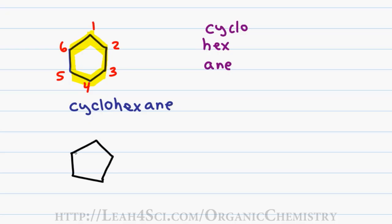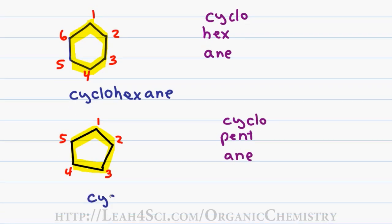Let's try another problem. For this molecule, I have five carbons in a ring giving me a first name of pent, a prefix of cyclo and the last name of Ane for the single bonds giving this molecule the name cyclopentane.